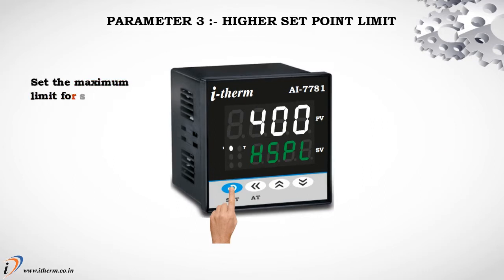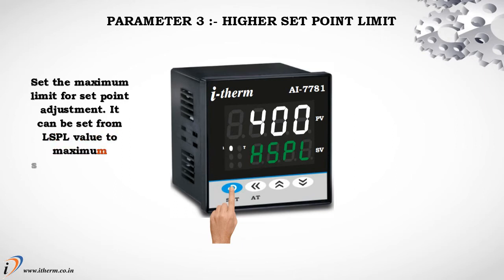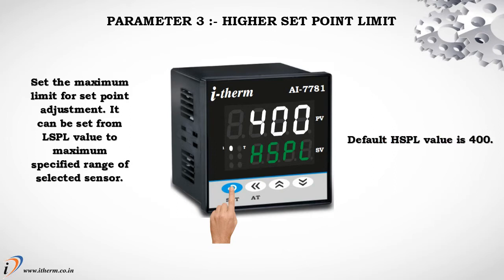Parameter 3 is Higher Set Point Limit. This sets the maximum limit for set point adjustment. It can be set from the L SPL value up to the maximum specified range of the selected sensor. The default H SPL value is 400.